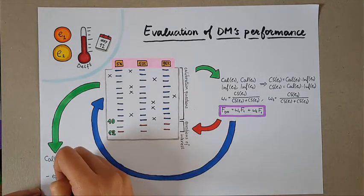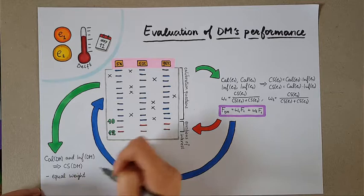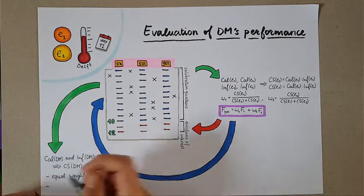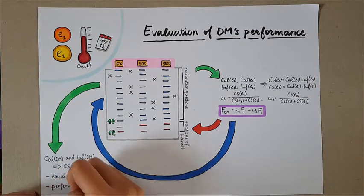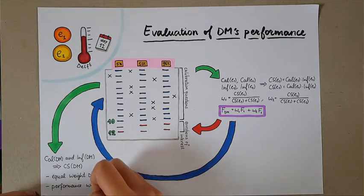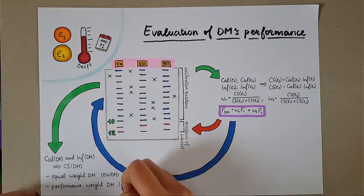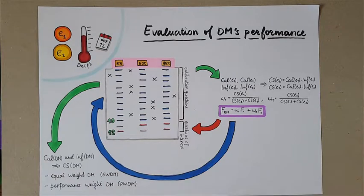We can repeat this procedure for any decision-maker, for example, the equal weight decision-maker. In turn, the decision-maker resulting from applying the classical model is going to be referred to as the performance-based decision-maker.